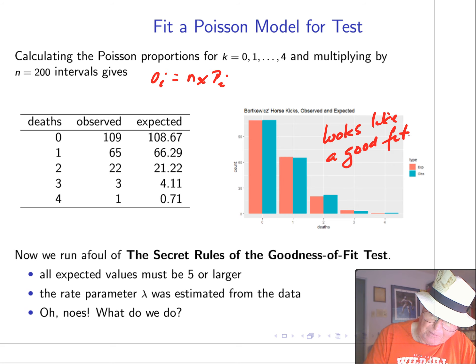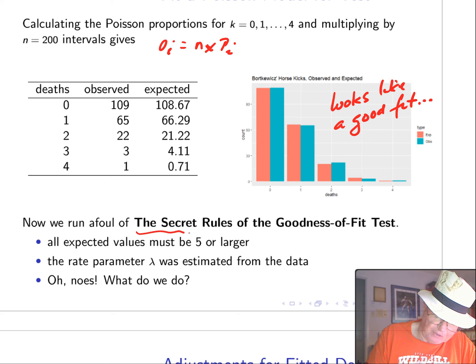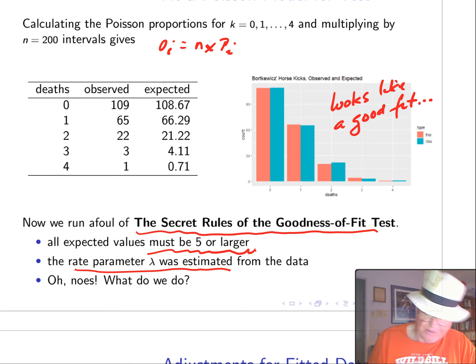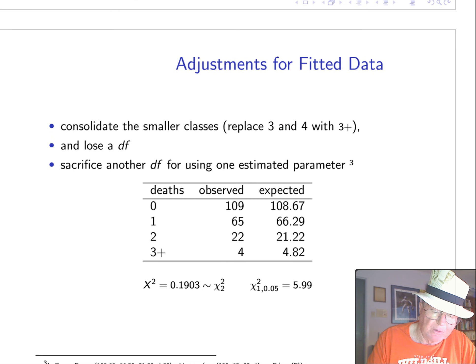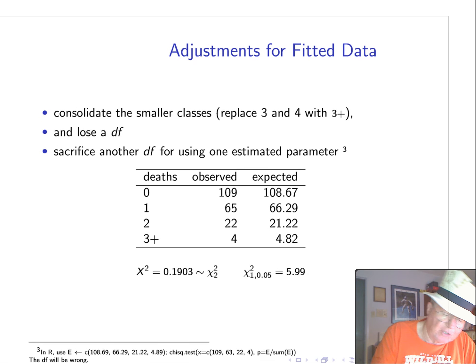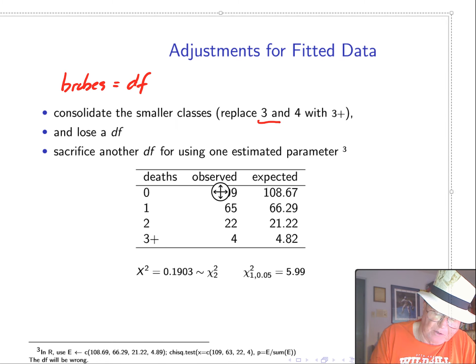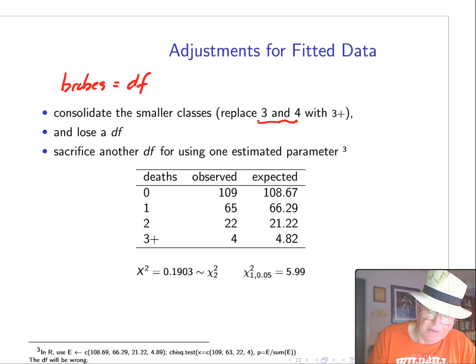But, of course, we need to do the test. However, there are some secret rules for the goodness of fit test. The first one, the toughie is, all expected values must be greater than 5. And, what about estimating the rate parameter, instead of just knowing it? What do we do? Well, we do what anybody does when they have a problem. We bribe our way out of it. So, bribes equals degrees of freedom. Because, that's all we have to give away. So, the first thing we'll do is, we'll consolidate the smaller classes. We'll take the 3 and 4 categories and lump another 1. And, then, that'll cause us to lose a degree of freedom. We'll sacrifice another degree of freedom for using one estimated parameter.